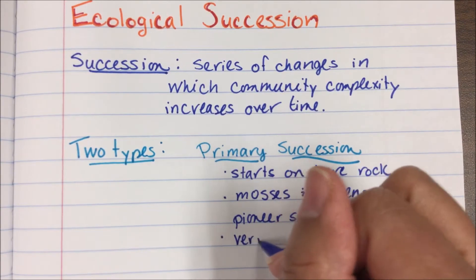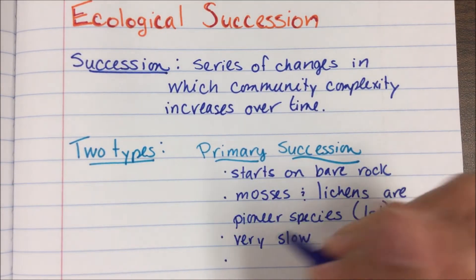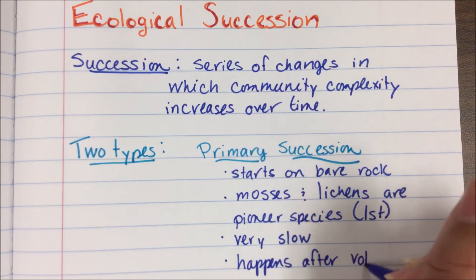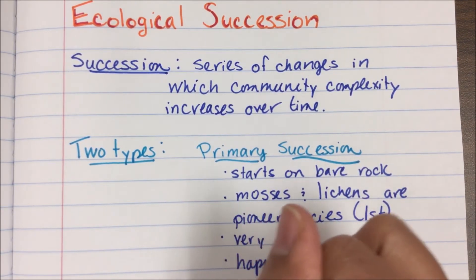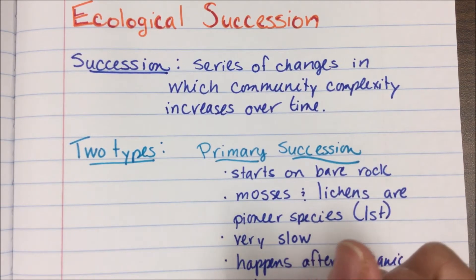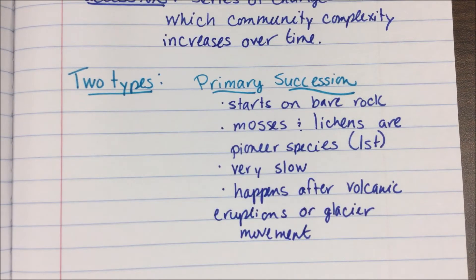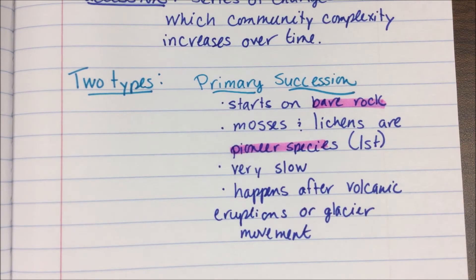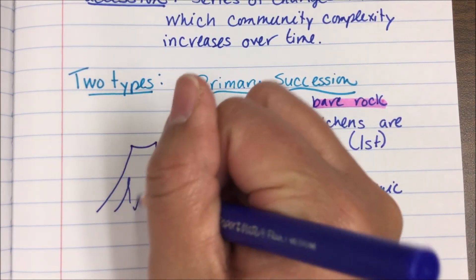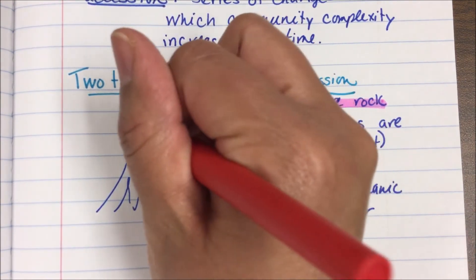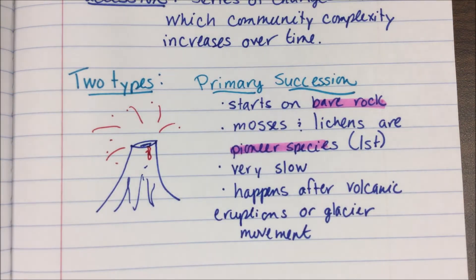Primary succession is very, very slow — it takes hundreds or sometimes thousands of years. Usually this happens after you have a volcano eruption or a glacier moving. So the keyword here: we start on bare rock with pioneer species. Here's your volcano spewing lava as an example.